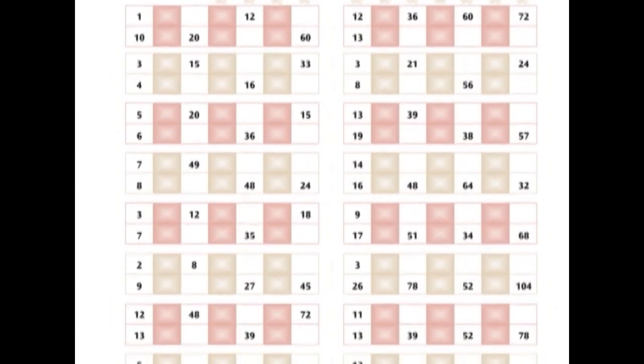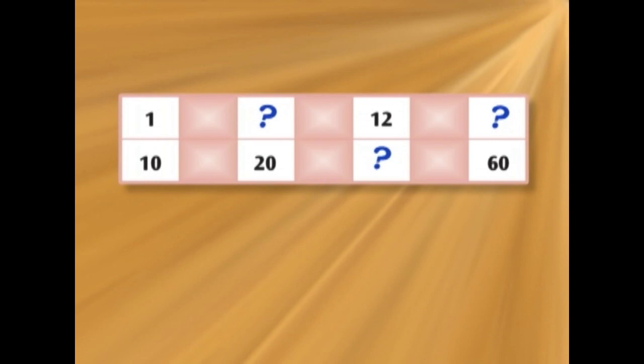In each block we have four ratios. We have 1 over 10, we have something over 20, we have 12 over something else, and we have another something else over 60. So let's name the missing numbers.